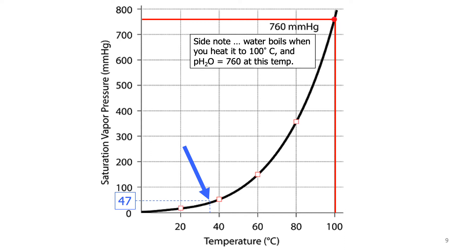Additionally, on this graph, we can see what happens at 100 degrees Celsius, which is the boiling temperature of water. At this temperature, the vapor pressure of water equals 760 millimeters of mercury, which is the same as the air pressure at sea level. And therefore, the water will turn from liquid phase into gas phase.